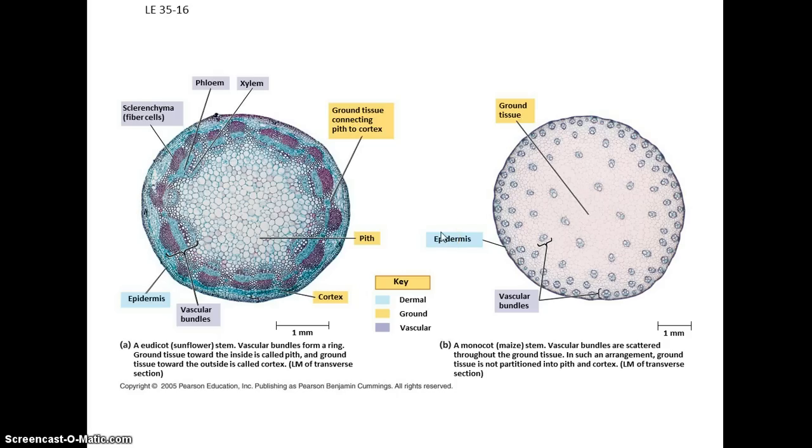For example, in the stem, we can see we've got dermal or epidermis on the outside. We've got these vascular bundles, the vascular tissue. And then everything else is the ground tissue. In the case of the stems, it's known as the pith. And these cells typically have the job of providing support and or storage of materials, water or food, for example.